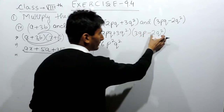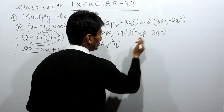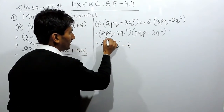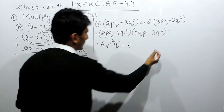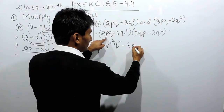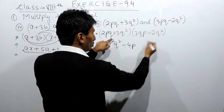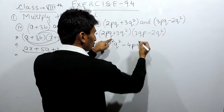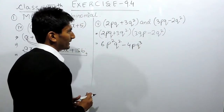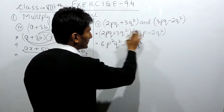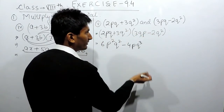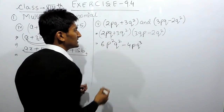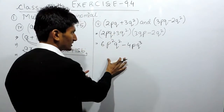This first term again multiplied by the second term. So 2 multiplied by 2 is 4, with a negative sign because this term is negative. And pq multiplied by q² — p will remain as it is, but q multiplied by q²: since this q has power 1 and the other has power 2, powers add to give q³. So this gives minus 4pq³.